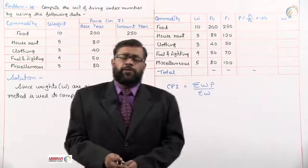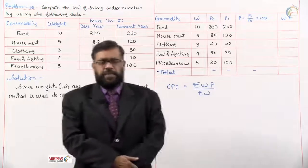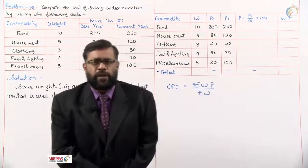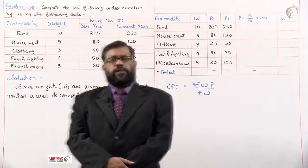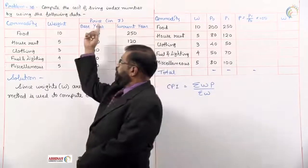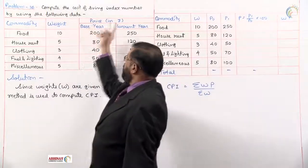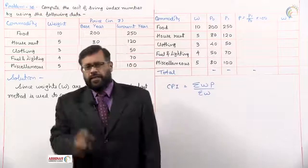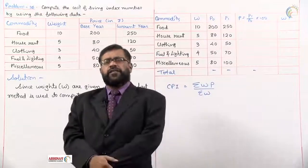In the last session we completed problem 35 on consumer price index number. In this session we shall take problem number 36. First, what the problem says: compute the cost of living index number by using the following data. Commodity, weight, price of base and current year is given. First we should decide which method is to be used. Should we go for aggregative expenditure or family budget method?